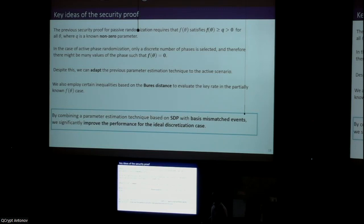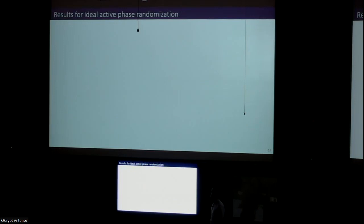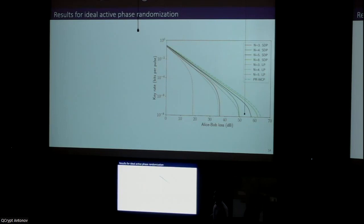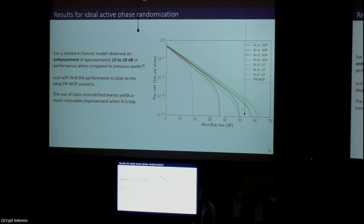Let's start with the ideal active case. Here we can see that for a standard channel model we get an improvement of around 10 to 20 dBs if we compare this with previous works. We can also see that with n equals 8, we get fairly close to the phase randomized weak coherent pulse scenario. We have tested it numerically—you can see this in the figure—but the use of basis-mismatched events is really useful in this low n realm.